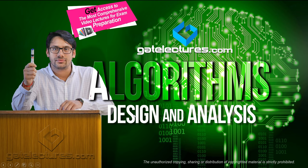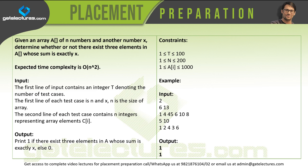Now let us discuss a new problem in this video. The problem says: given an array A of n numbers and another number x, determine whether or not there exist three elements in A whose sum is exactly equivalent to x.